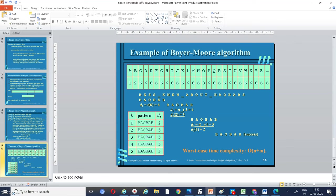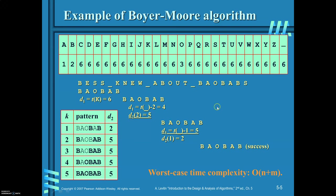Next, we will apply the algorithm to this example. For pattern B, A, B, C, B, A, B — you have already seen in the Horspool algorithm how to generate the shift table. The only additional thing is you are required to generate one more table — the good suffix table — which is generated here.